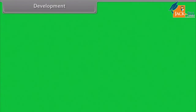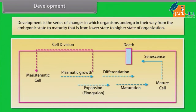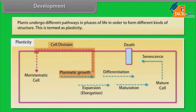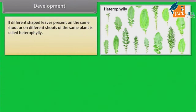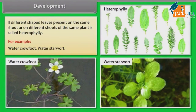Development is the series of changes in which an organism undergoes from the embryonic state to maturity — from a lower state to a higher state of organization. Plants undergo different pathways in phases of life in order to form different kinds of structures; this is termed as plasticity. If different shaped leaves are present on the same shoot or on different shoots of the same plant, it is called heterophylly. For example, water crowfoot and water starwort.